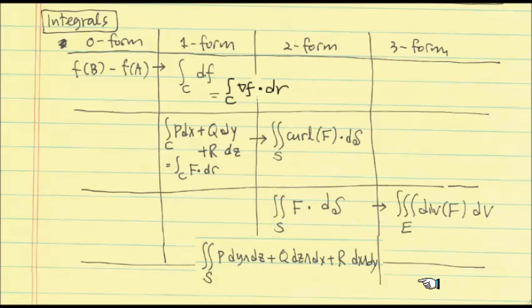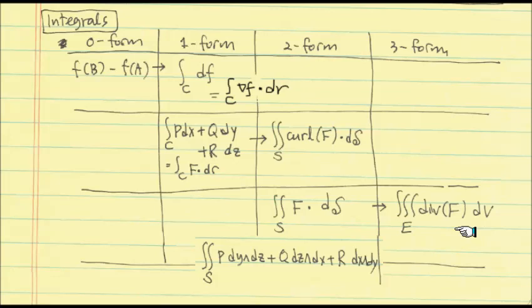The idea is: starting from the zero-form, you arrive at a special vector field which is a gradient vector field. Starting with an arbitrary vector field in the one-form integral calculation, you create this very special vector field called curl F. And in the two-form, starting with an arbitrary vector field, you introduce this scalar function — divergence of F — which goes back to a scalar. Let me summarize these operations.